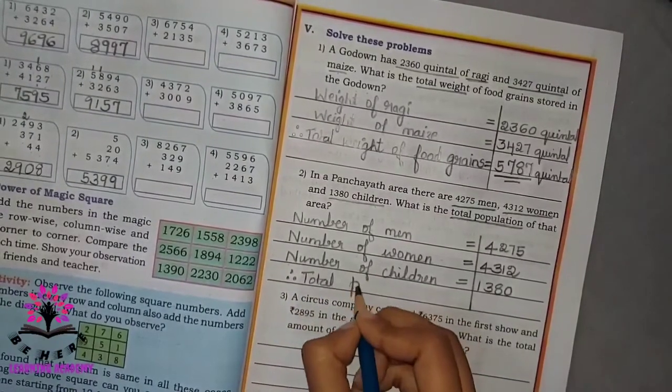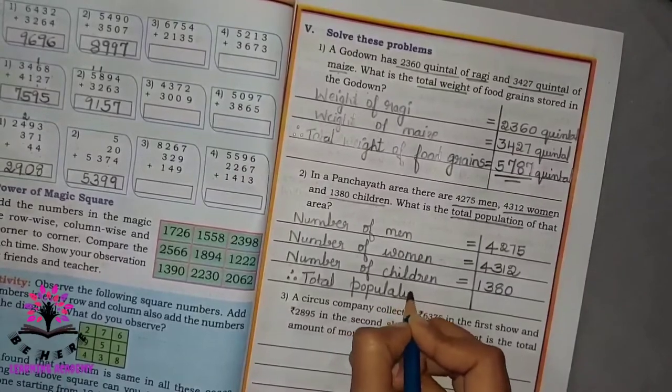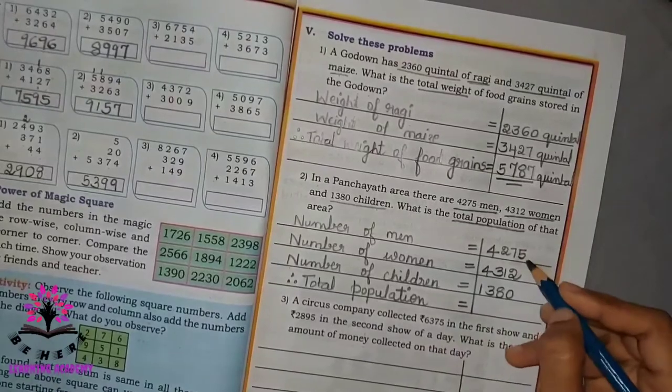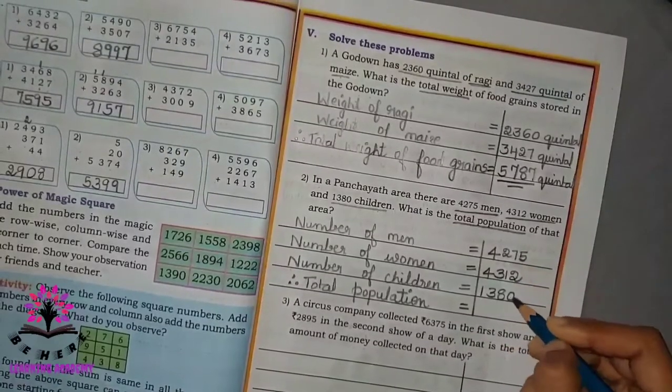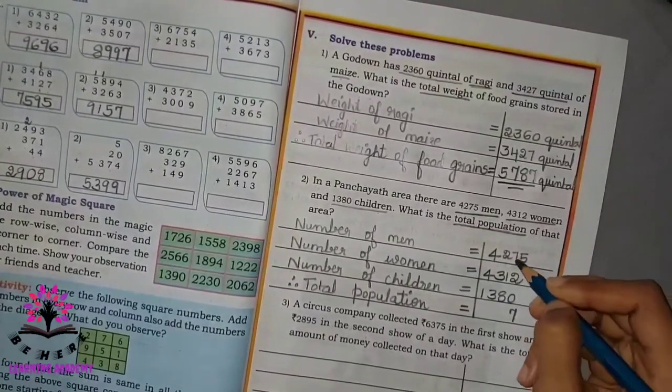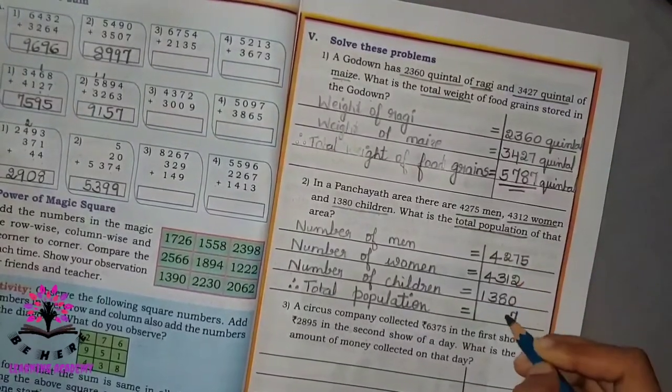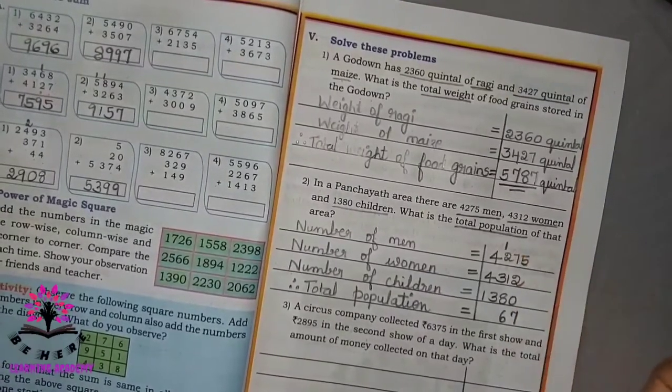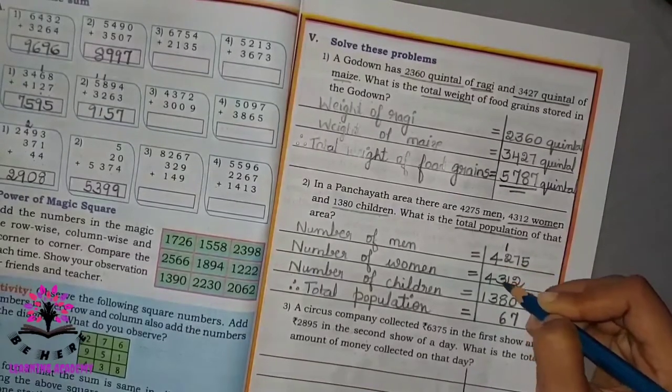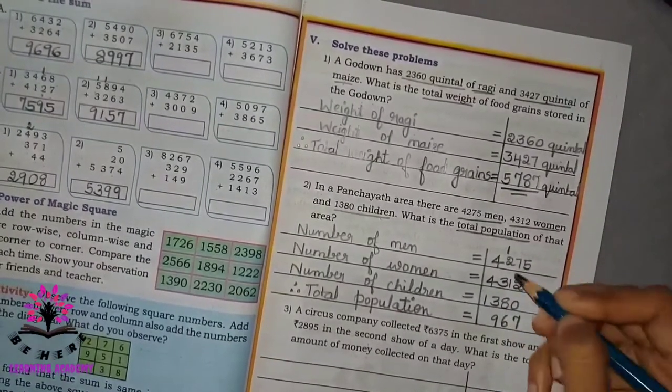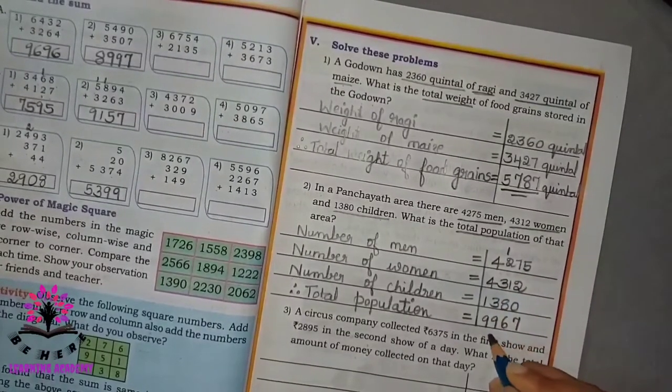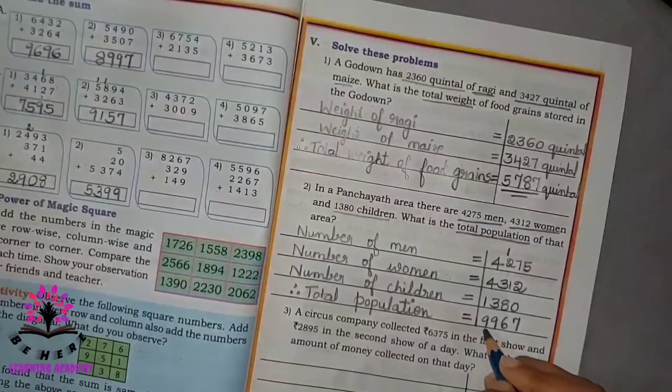Total population is equal to... Let's add now. 5 plus 2 plus 0 equals 7. 7 plus 1 is 8, 8 plus 8 is 16. 1 goes above. 1 plus 2 is 3, 3 plus 3 is 6, 6 plus 3 is 9. 4 plus 4 is 8, 8 plus 1 is 9. So the answer is 9,967.